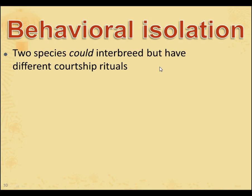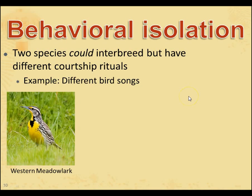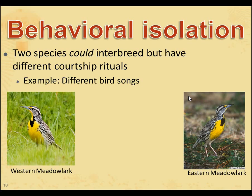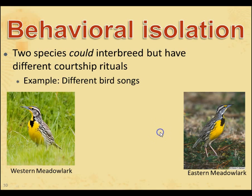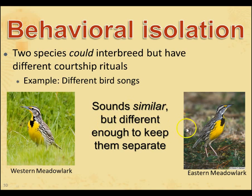Here's what behavioral isolation is: this is when two species could interbreed but have different courtship rituals. That there is the western meadowlark; this is the eastern meadowlark. If you were to classify them by looks alone, you would probably put them as the exact same species because they look almost identical. However, to each other they are very, very different. Take a listen to the western meadowlark versus the eastern meadowlark — they have very different sounds. From the point of view of these birds, that is different enough to keep them separate. They don't want to reproduce with each other. Even though it might sound somewhat similar to us, to them it's a world of difference. So even though they can mate and produce fertile offspring, they choose not to because they just have different behaviors.